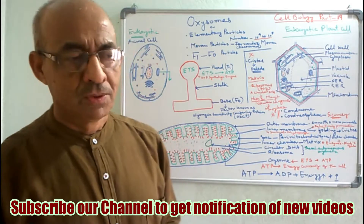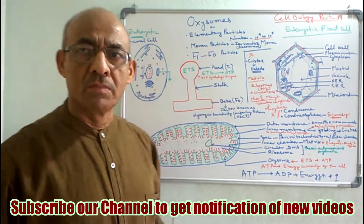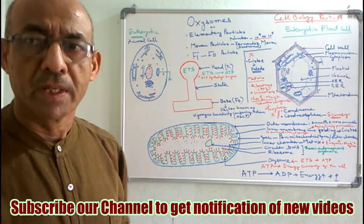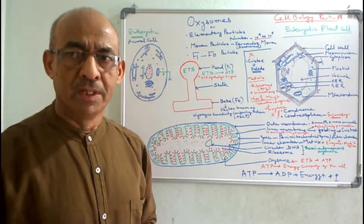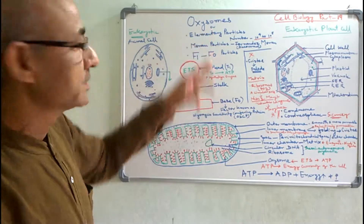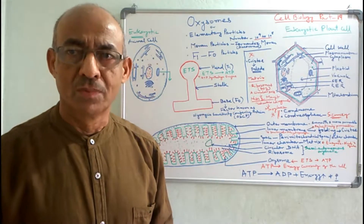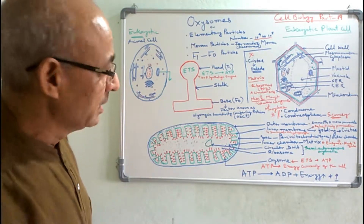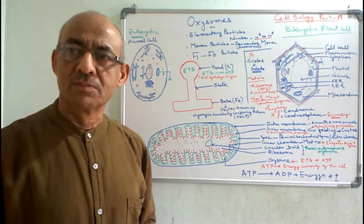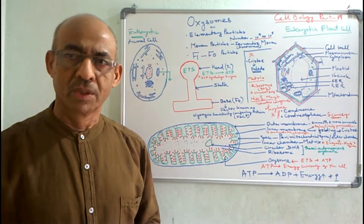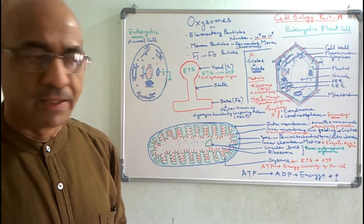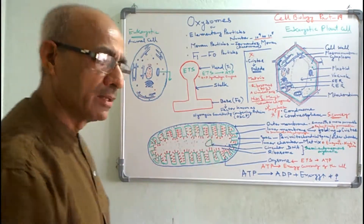We discussed that small particles are found on the inner surface of the inner membrane of mitochondria. Here we will discuss regarding those particles. Those particles are called as oxysomes. These small particles are very important because they are the site for the synthesis of energy in the form of ATP, and due to that reason the mitochondria are called as the powerhouse.